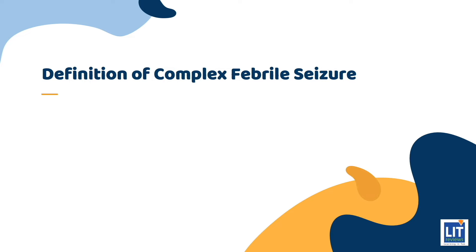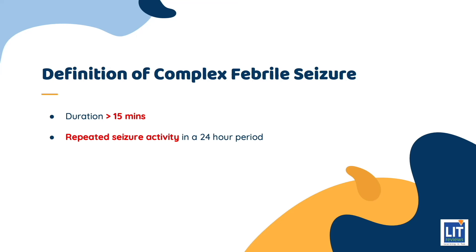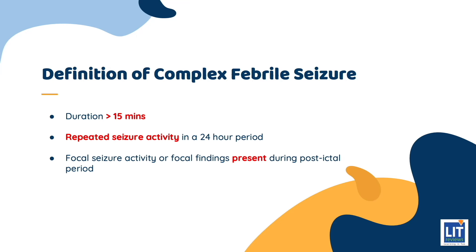Complex febrile seizures are any seizures that occur in a febrile child that do not meet the criteria previously described. Specifically, they may last longer than 15 minutes, recur within 24 hours, or have a focal component either during the seizure activity or in the post-ictal period afterwards. It is important to differentiate between simple and complex febrile seizures because the recurrence risk and associated findings are different.